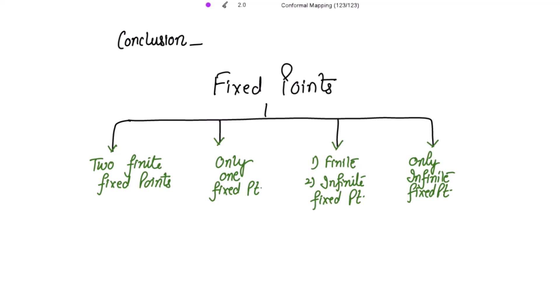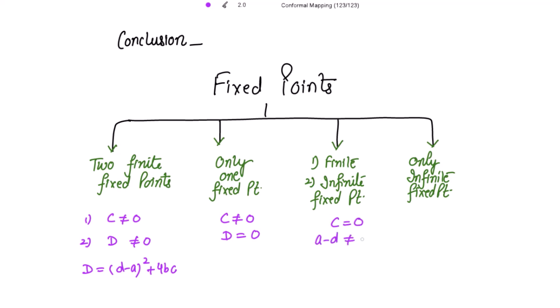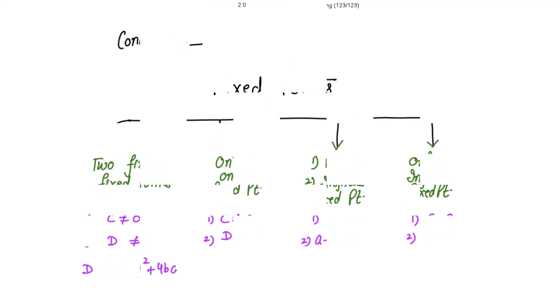In conclusion: we get two finite fixed points if c is non-zero and the discriminant is non-zero, where discriminant equals (d minus a) squared plus 4bc. We get only one fixed point if c is non-zero and the discriminant is zero. For case two: we get two fixed points — one finite, one infinite — for c equal to zero and a minus d non-zero. And we get only one infinite fixed point for c equal to zero and a minus d equal to zero. Thank you.